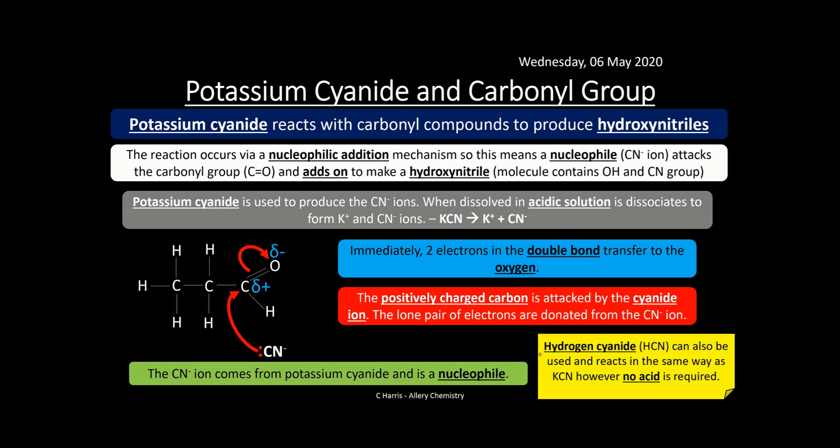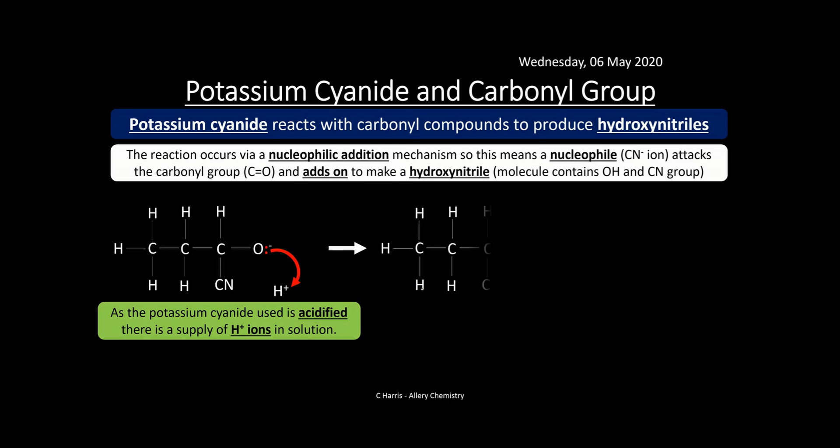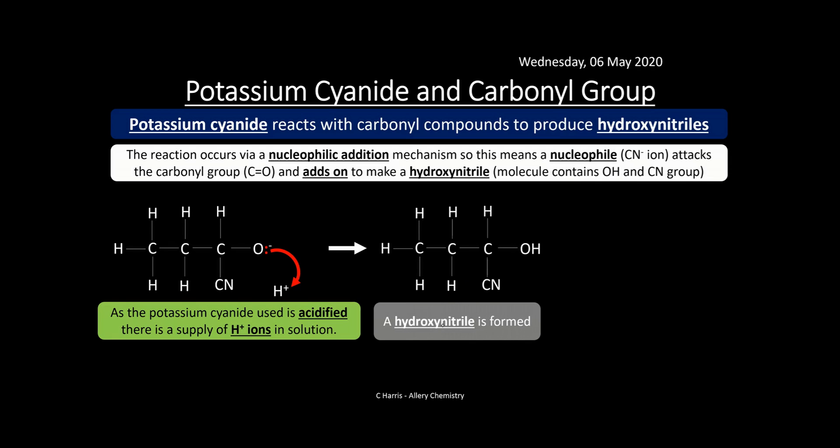We can use hydrogen cyanide, but it's easier and safer to use potassium cyanide. We dissolve potassium cyanide in acid to provide a supply of H⁺ ions — we don't need to do that with hydrogen cyanide because it already has a supply of H⁺. As the potassium cyanide is acidified, there's a ready supply of H⁺ ions. The oxygen, which has a lone pair of electrons, then reacts with the H⁺, forming our hydroxynitrile.